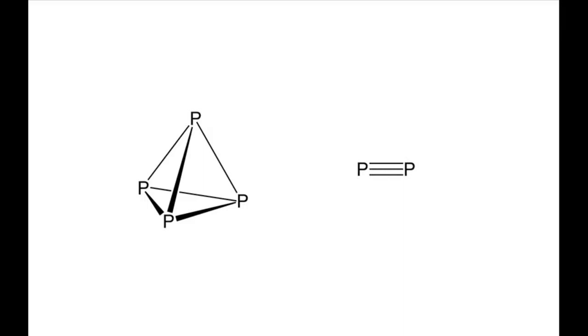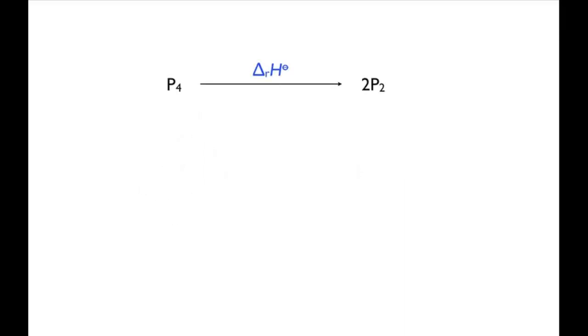To answer this, you can construct an enthalpy cycle and use the bond enthalpies for the phosphorus-phosphorus single and triple bonds to predict the enthalpy change for conversion of tetrahedral P4 to dimeric P2. Strictly speaking, you need to also consider the entropy changes, as it's the change in Gibbs energy that dictates the feasibility of the reaction. But you can often get a good idea just by looking at the enthalpy changes, for which the data is generally easier to find.